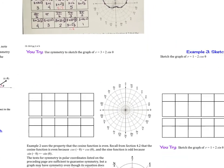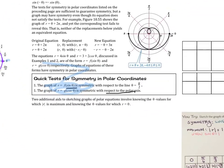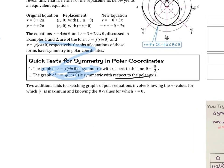And so the next thing we're going to take a look at is two additional aids in sketching graphs of polar equations. So knowing the theta values for which r is maximum and knowing the theta values for which r equals zero will also help us in sketching some graphs.